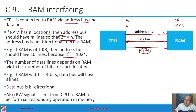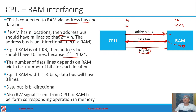Suppose the CPU wants to write something to location 1000. The CPU will first send address 1000 and the write signal onto the address bus and read/write line, and it will also send the 8-bit data to be written to RAM. On the other side, RAM takes the address, activates location 1000, and writes the data to that location. To perform a read operation, the CPU sends the address and a read signal; based on the address received, RAM activates the corresponding location and sends the data back on the data bus.